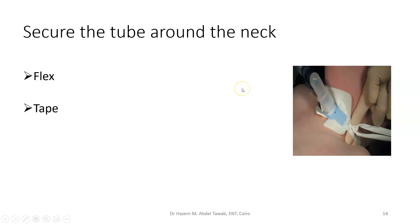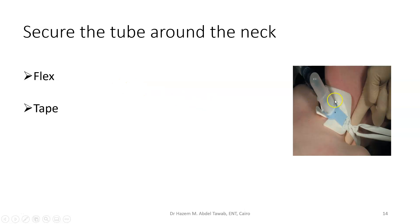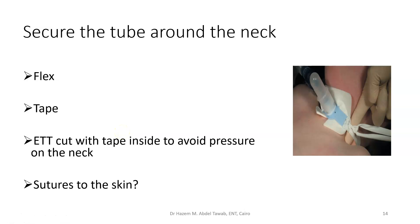One important trick: should you tie around the neck while the patient is in the extended or flexed position? Please do it in the flexed — or neutral — position. If you tie while the neck is extended, the tie becomes loose when the head returns to normal position. Return the head to slight flexion or neutral before tying. Sutures to the skin can be done as double security but should not be relied upon alone, given children's pliable skin.